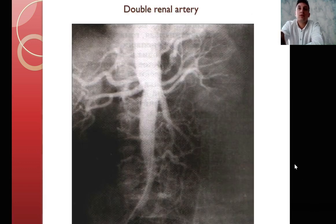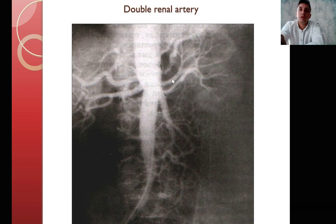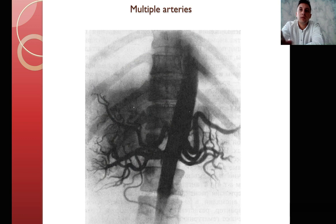There also exists an anomaly like doubling of the renal arteries. On the angiography x-ray you can see doubling here and here. We can also see a more rare anomaly — multiple arteries — with a large number of arteries from both the left and right kidney.